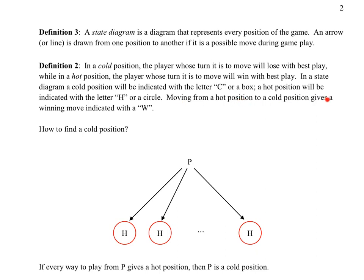Moving from a hot position to a cold position is indicated with a W. To find a cold position: if every way of playing from a particular position leads to a hot position, then that position is cold. All of these hot positions below make you conclude that position P is cold.